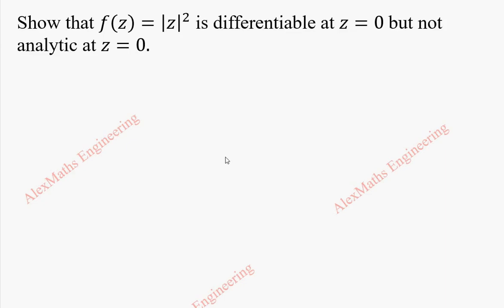Hi students, this is Alex here. In this video, we are going to show f(z) = |z|² is differentiable at z = 0 but not analytic at z = 0.